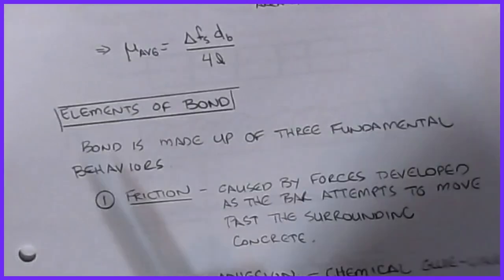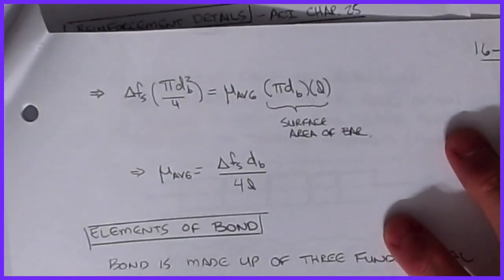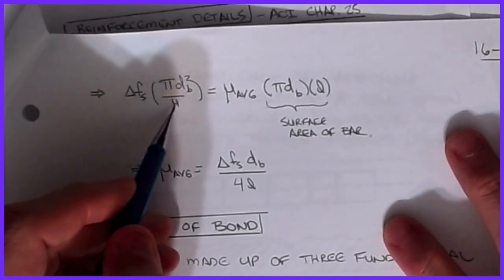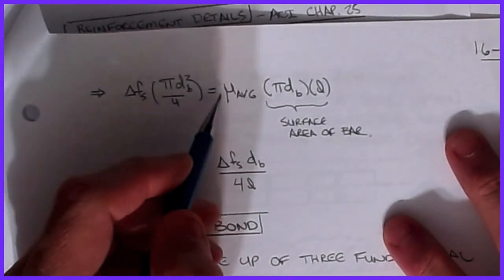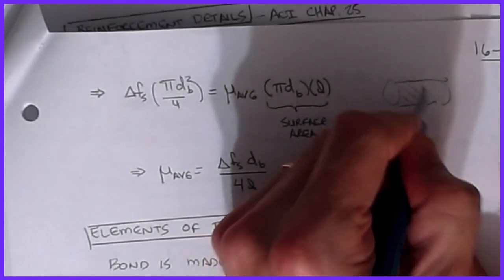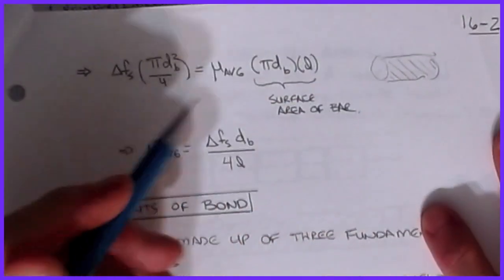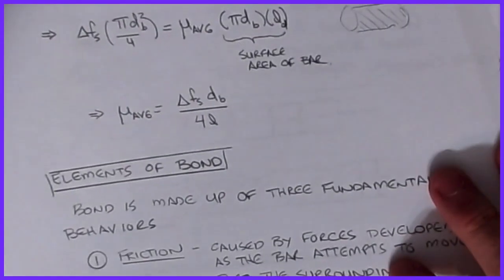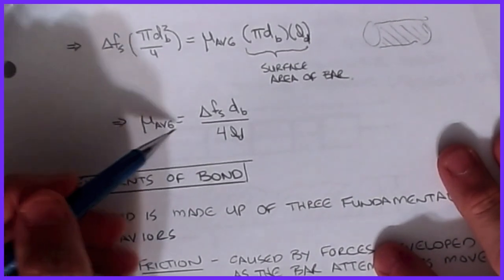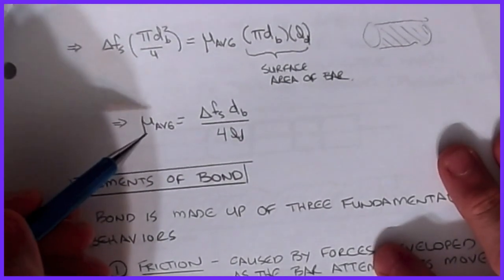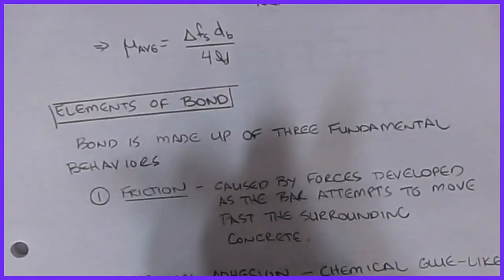A quick calculation: over a given length of bar, the cross-sectional area times the stress I need to develop must equal the average bond stress acting on the surface area of that cylinder. So: the cross-sectional force = average bond stress × circumference × length (ld). Solving, the average bond stress equals Δfs × db / (4 × ld). If I know my limit I can tell whether there's enough. However, this is very difficult to quantify.